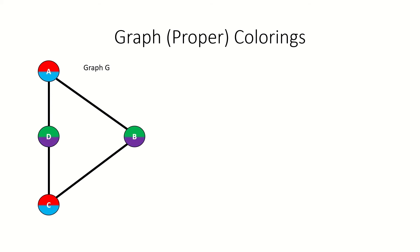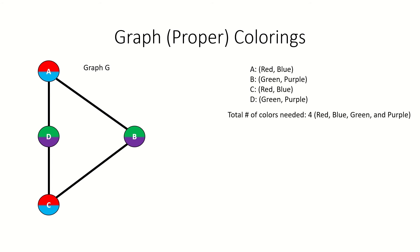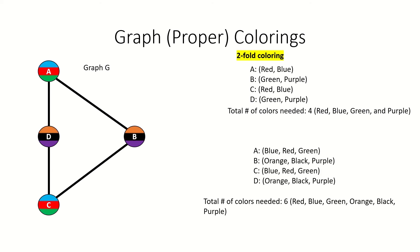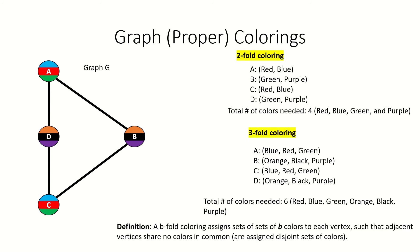Moving on, fractional coloring is when we assign a set of colors to each vertex such that the sets assigned to adjacent vertices are disjoint. Assigning a set of two colors, as we've done here, to each vertex is called a two-fold coloring. Assigning a set of three colors to each vertex is called a three-fold coloring, and generalizing, assigning a set of b colors to each vertex is called a b-fold coloring.